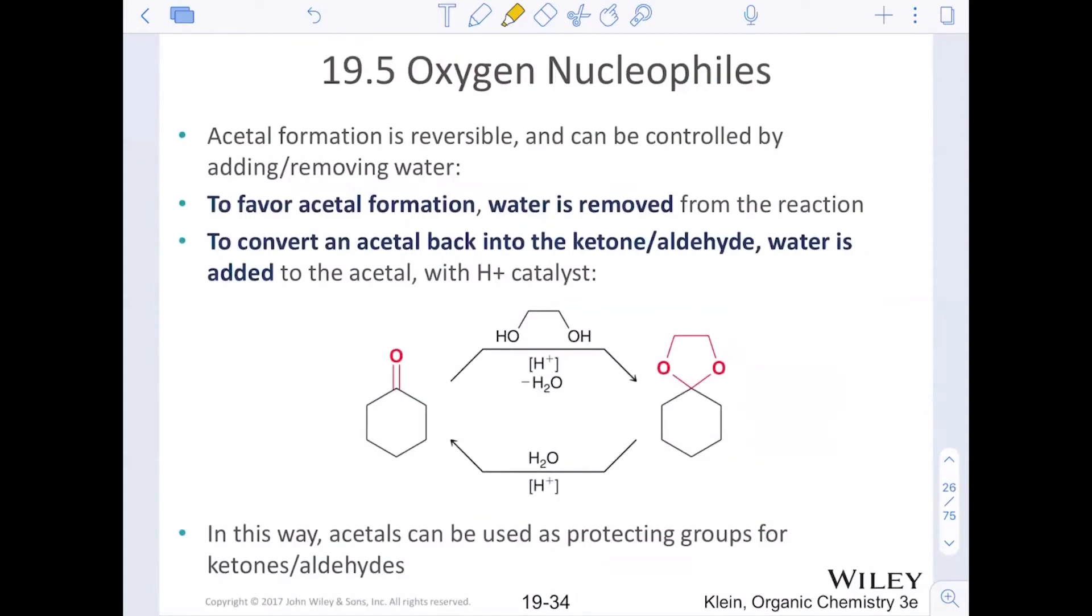Acetal formation is reversible. We'll go through that mechanism at the very end of this video, and it can be controlled by adding or removing water. So to favor acetal formation, water is typically removed from the reaction. This could be boiling it off. This could be some sort of water trap in laboratory setup. But water is technically removed. So higher concentration acid is usually seen to convert an acetal back to the ketone or the aldehyde to go back to the carbonyl compound. Water is added. We simply just add H3O+, right? A lot of water and a little bit of acid, and that goes a long way to go backwards. So these are great ways to use protecting groups for our ketones and our aldehydes.